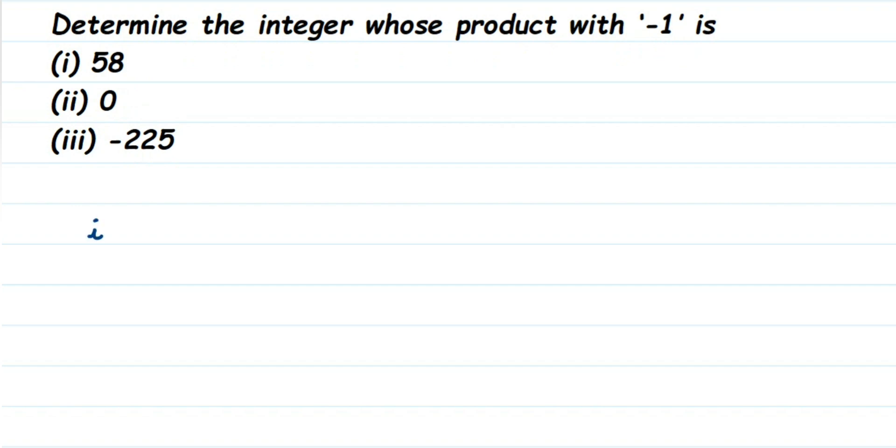We just multiply with -1 and get the answer. The first question is 58, so to multiply 58 by -1: when you're multiplying integers, you multiply the numbers first and then put the sign. So 58 multiplied by 1 is 58. Now count the number of negative signs you have.